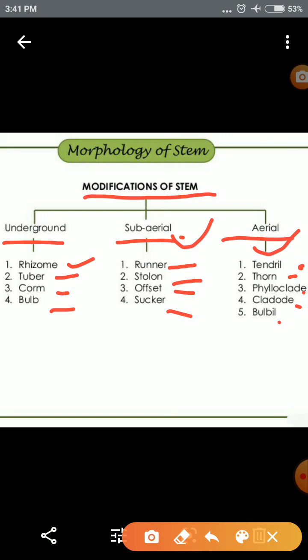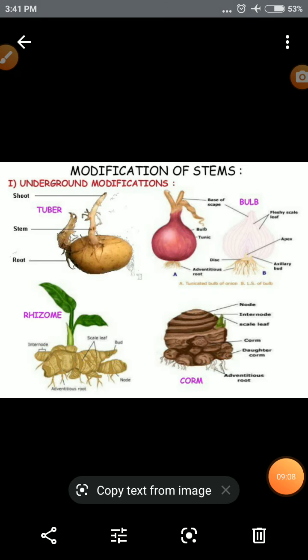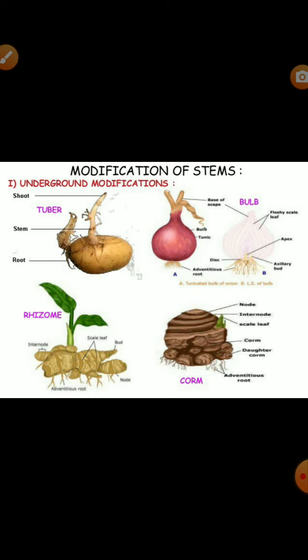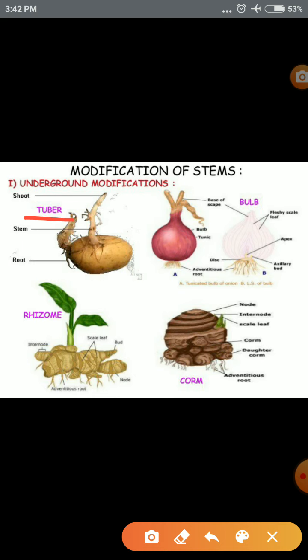For example, underground modifications: the first is the tuber. A basic example is potato. The tuber is an underground stem modification used for food storage. It is a specialized branch that develops underground horizontally. In the tuber, a number of eyes are present from which new plants form. Potato — botanical name Solanum tuberosum — is the best example of a tuber.